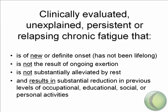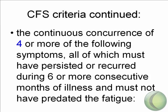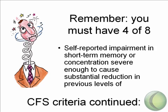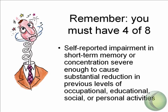Number two: the concurrent occurrence of four or more of the following symptoms, all of which must have persisted or recurred during six or more consecutive months of illness, and must not have predated the fatigue. One of those symptoms is self-reported impairment in short-term memory or concentration severe enough to cause substantial reduction in those same previous levels of activities of your life.